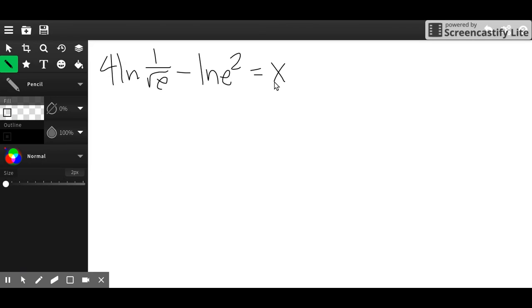For this one, I'm going to start out with changing all the natural logs to log of e. For this first part, I'm going to ask myself what e raised to what is equal to 1 over root 3. Well, the square root of 3 is e raised to 1 half, and to get it to the bottom here, it would have to be negative. So this is negative 1 half times 4.